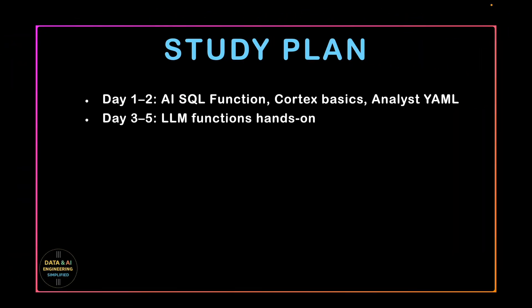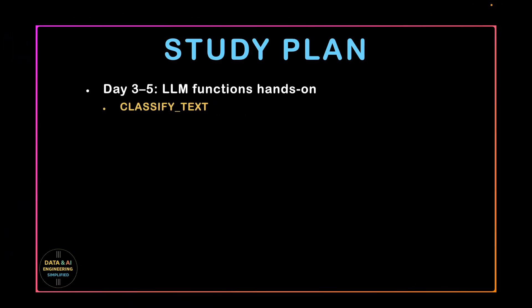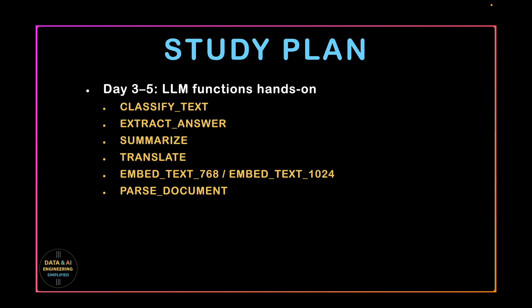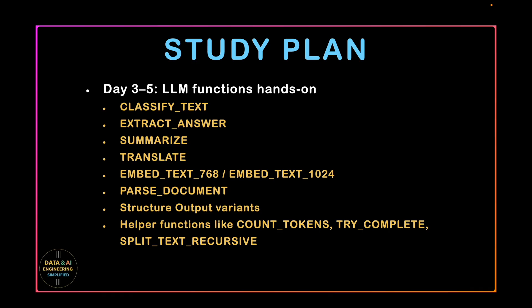Use the next two to three days to go deeper into purpose-built Gen AI and LLM functions. Practice hands-on with Classify Text, Extract Answer, Summarization, Translate, AI Embed or the older versions like Embed Text 768 or Embed Text 1024, and Parse Document. The exam will specifically ask you to differentiate a DocAI use case versus an ad-hoc document processing use case. Also cover structured output, variant helper functions like Count Token, Try Complete, and Split Text Recursively. Practice building a pipeline — understanding pre-processing, post-processing, and which AI functions to apply.